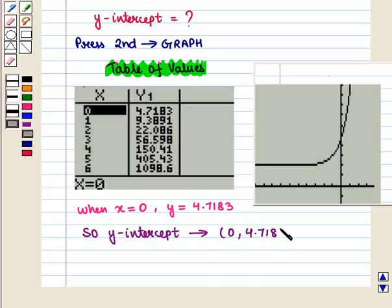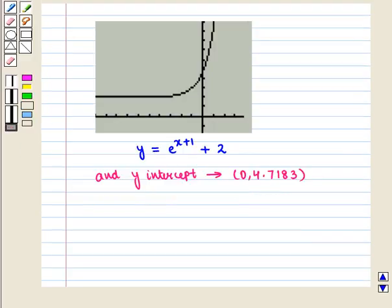Thus, this is the required graph for the given exponential function, y is equal to e raised to the power x plus 1 plus 2. And its y-intercept is given by the ordered pair 0, 4.7183.